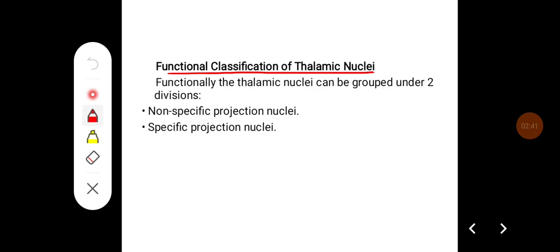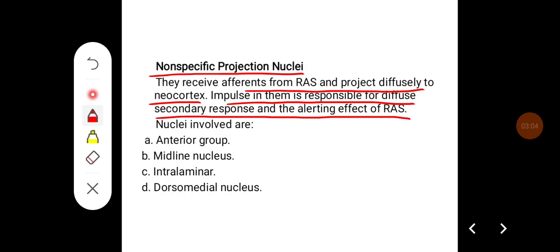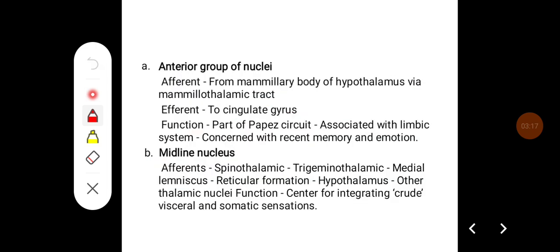Functional classification of thalamic nuclei: functionally, the thalamic nuclei can be grouped into two divisions — non-specific projection nuclei and specific projection nuclei. Non-specific projection nuclei receive afferents from the reticular activating system and project diffusely to the neocortex. The impulse in them is responsible for diffuse secondary response and the alerting effect of the reticular activating system. The nuclei involved are the anterior group, midline nucleus, interlaminar, and dorsomedial nucleus.